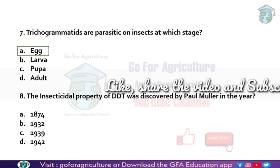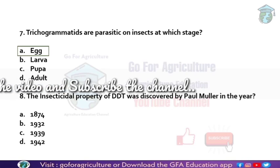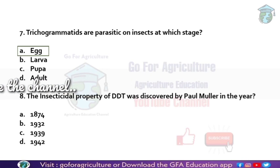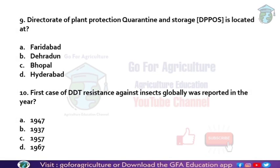Next: the insecticidal property of DDT was discovered by Paul Müller in the year 1939. This has already been discussed in the history of pest management and the history of insecticides.